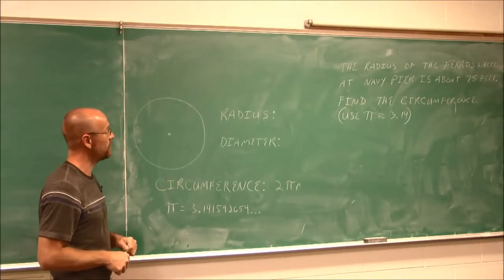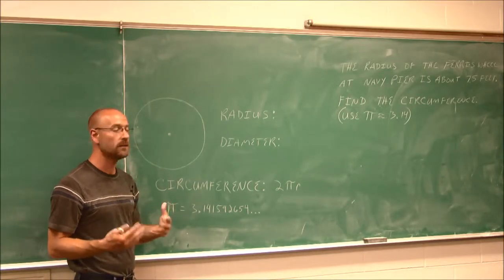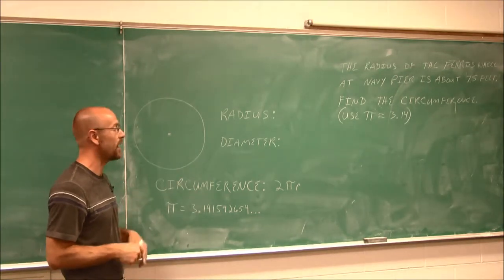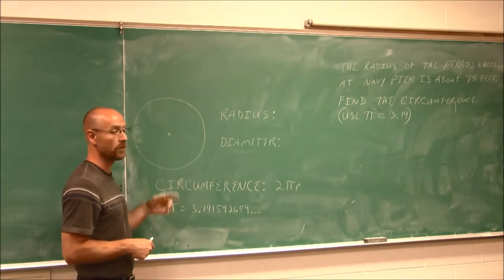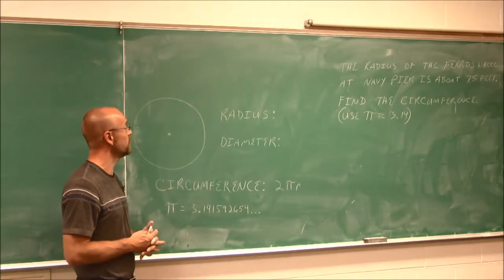We have to define some terms before we can actually find the distance around a circle. The distance around a circle is called the circumference.